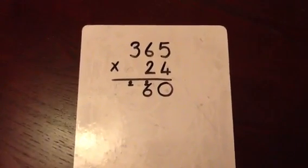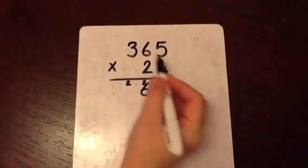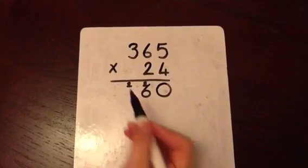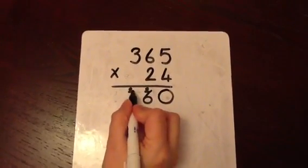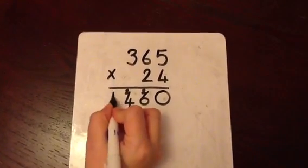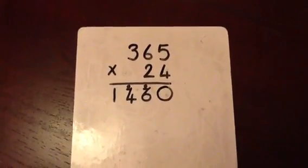4 multiplied by 3 is 12. And the 2 make 14. We write the 4 in the hundreds column and the 1 in the thousands column.